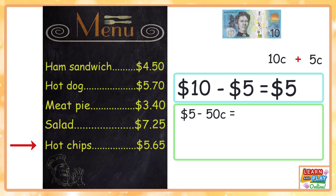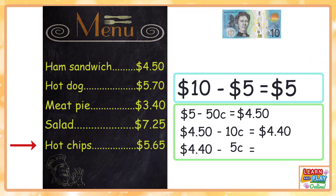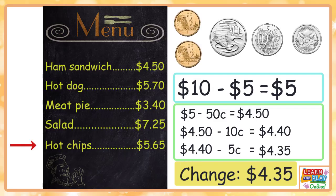Now we work out four dollars fifty take away ten cents — that leaves us with four dollars and forty cents. Finally, four dollars forty take away five cents gives us four dollars and thirty-five cents. So we will get change of four dollars and thirty-five cents.